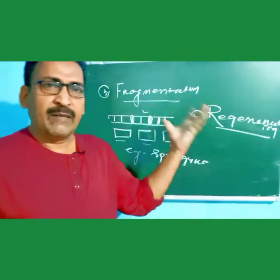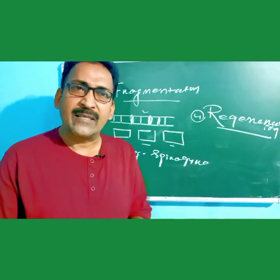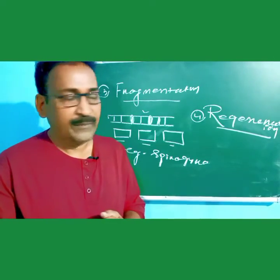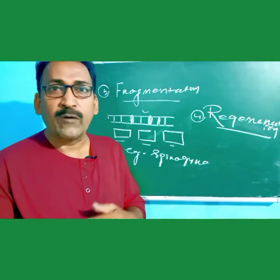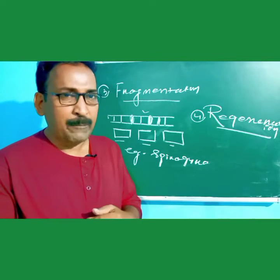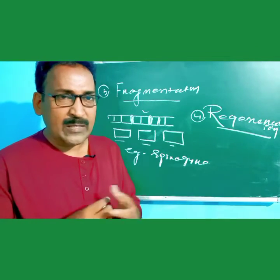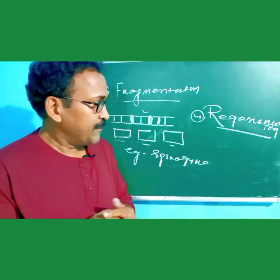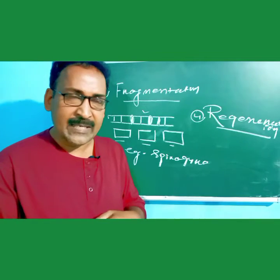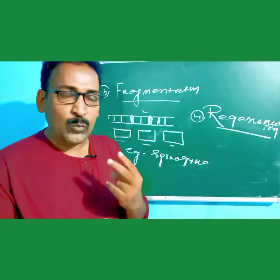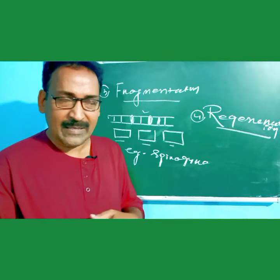That is fragmentation. Now, regeneration. Regeneration is seen in animals such as Planaria, and sponges also reproduce by regeneration. In the case of Planaria, two types of reproduction take place: first fission, then regeneration.